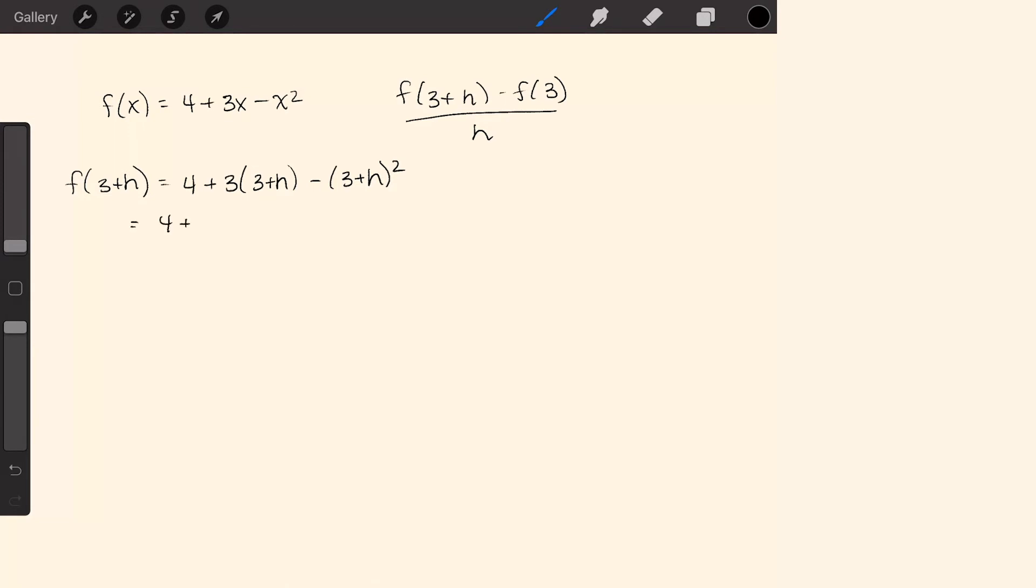That equals 4 plus 9 plus 3h minus, let's evaluate this over here, 3 plus h times 3 plus h. That'll equal 9 plus 6h plus h squared.